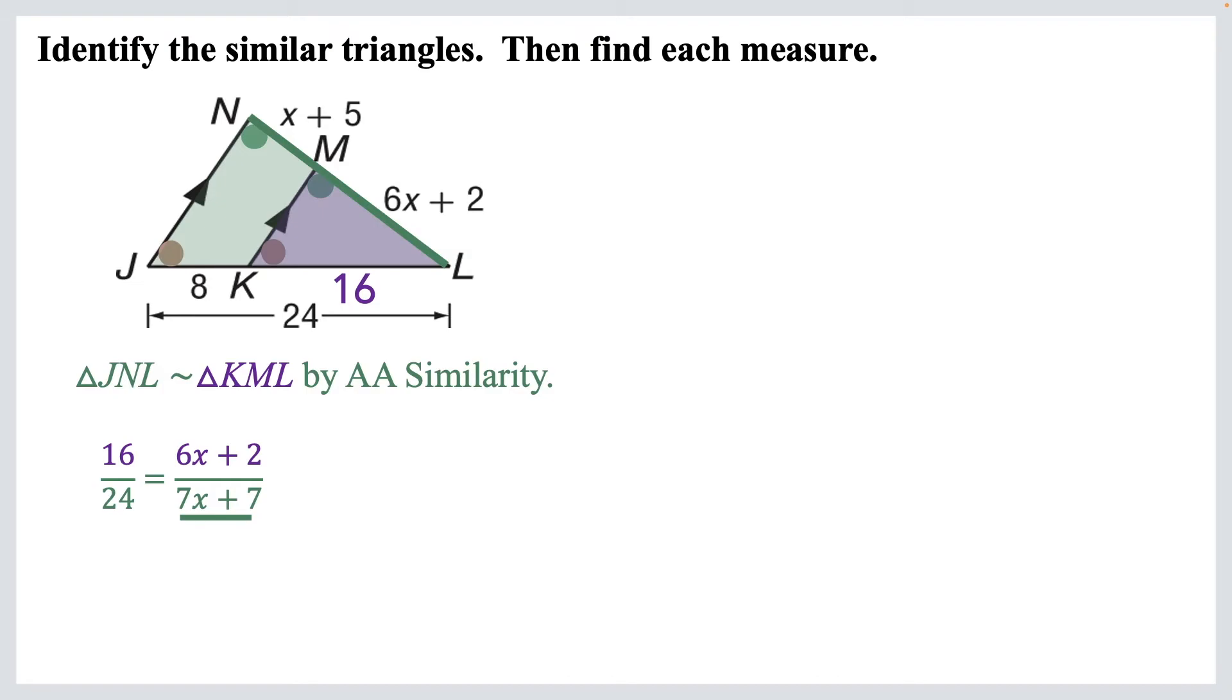Alright, now before we go forward, let's take that 16 and 24 and reduce it, because that makes an easier problem. So 16 over 24 reduces to 2 over 3, and then we still have 6X plus 2 over 7X plus 7, and we can cross multiply. So we've got 2 times the whole quantity, 7X plus 7 equals 3 times the quantity, 6X plus 2.